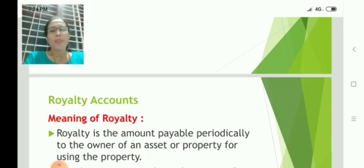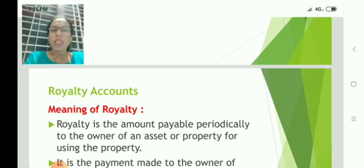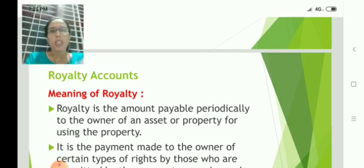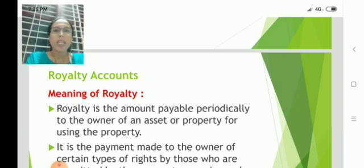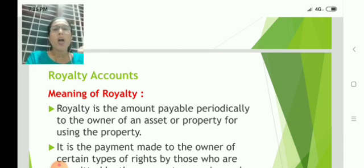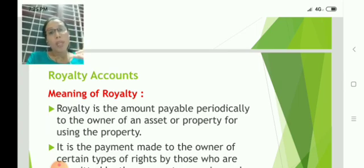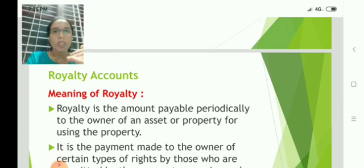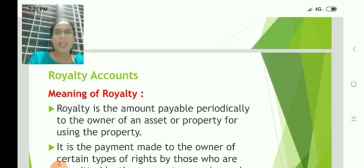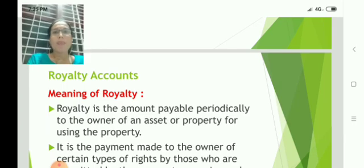So what is royalty? Have you heard this word? Royalty is nothing but the amount paid by one party to another for using the right. For example, if you have a piece of land, you give that land to somebody else for lease purposes. That party who receives the land from you on a lease basis has to pay a certain fixed amount to you every year — that amount is considered as royalty. Examples include mining and fishing.